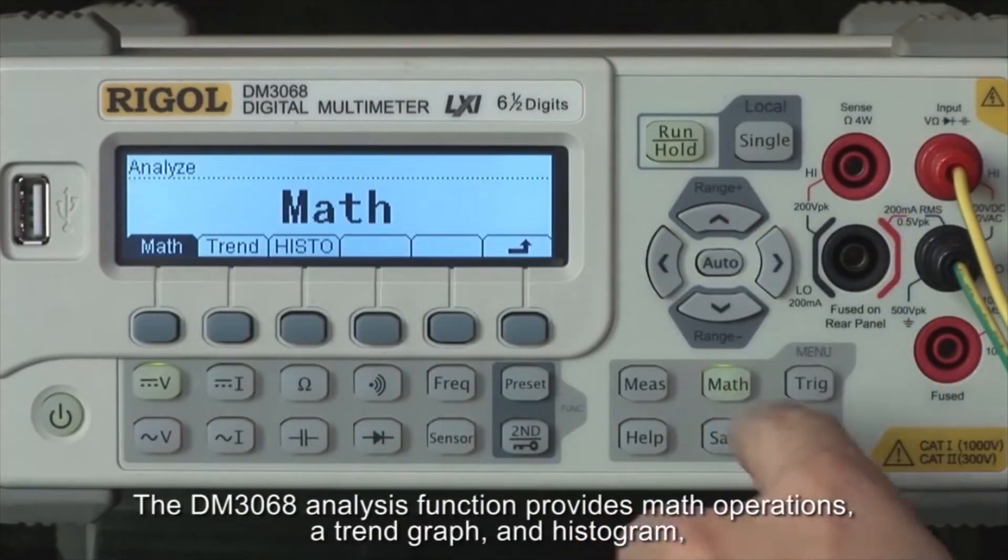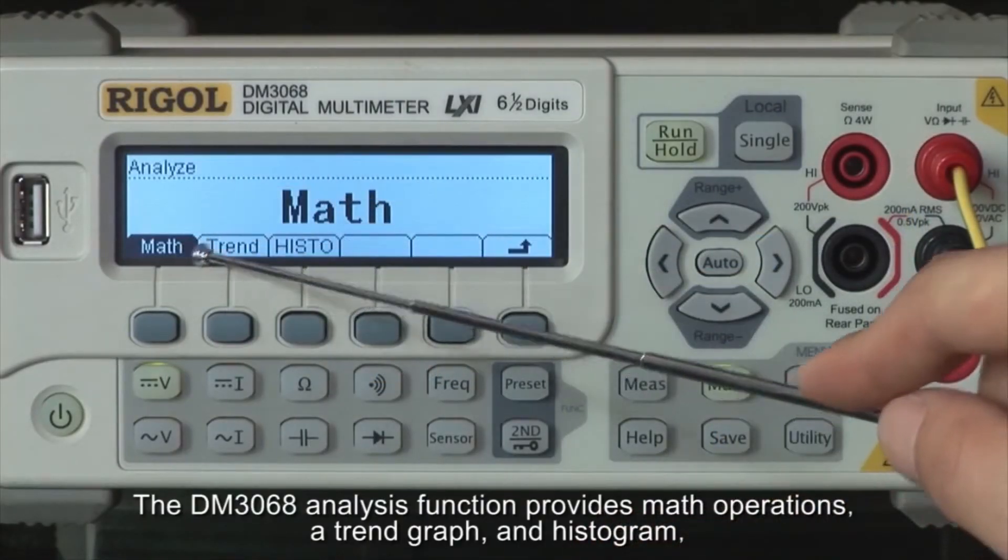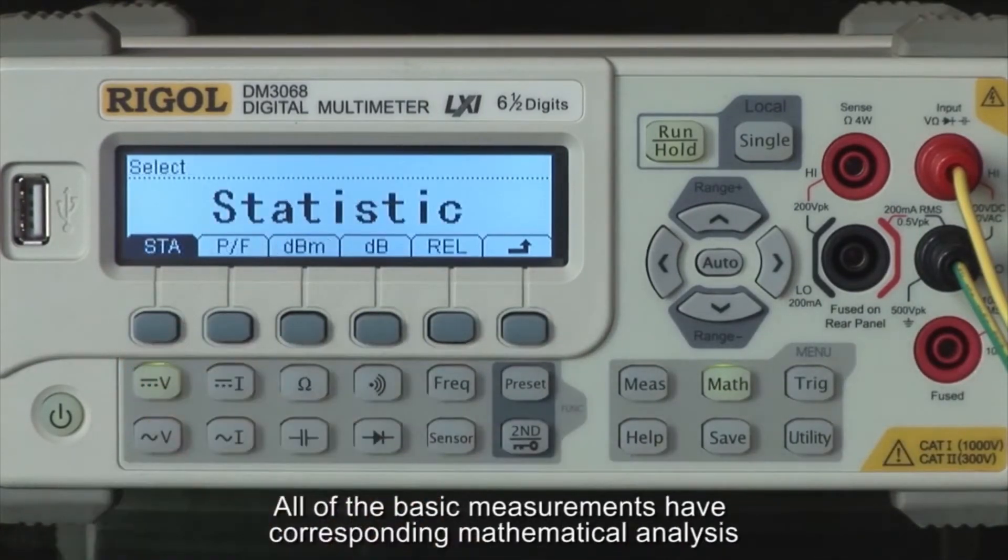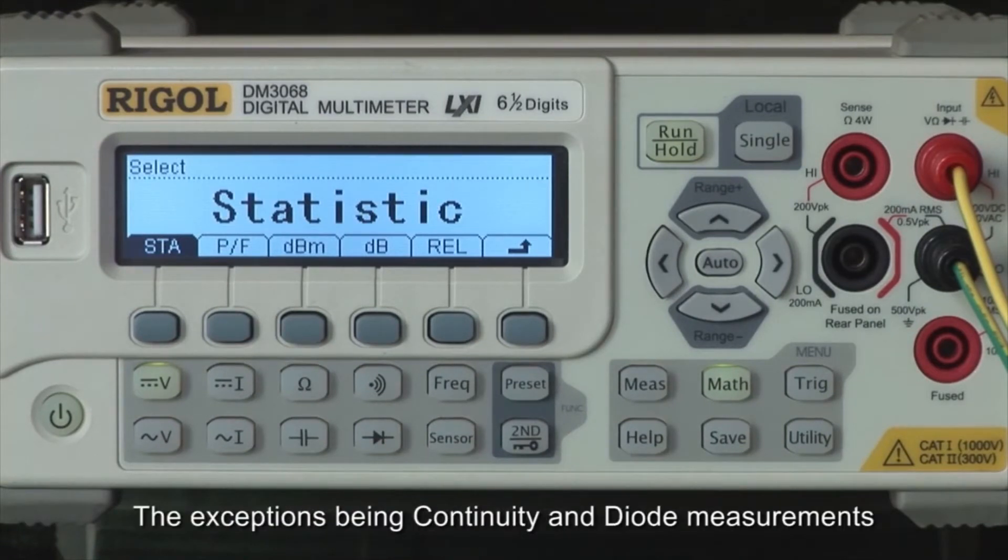The DM3068 analysis function provides math operations, a trend graph, and histogram. All of the basic measurements have corresponding mathematical analysis, the exceptions being continuity and diode measurements.